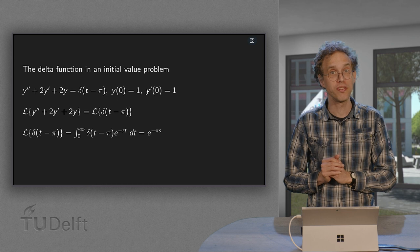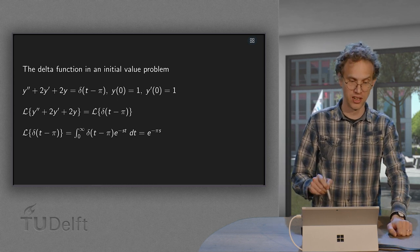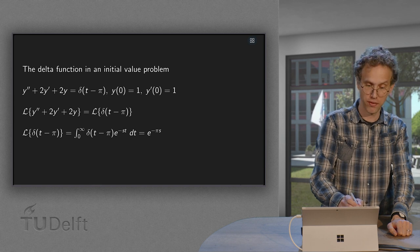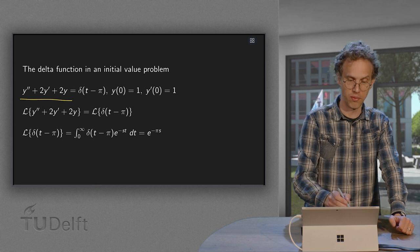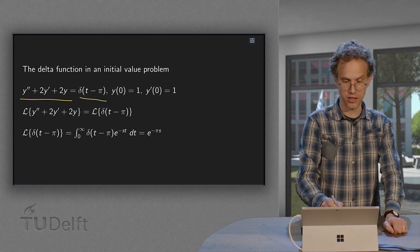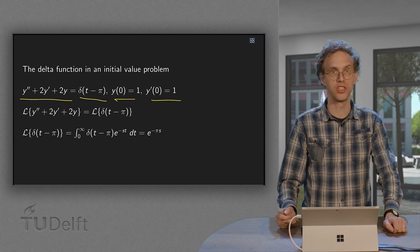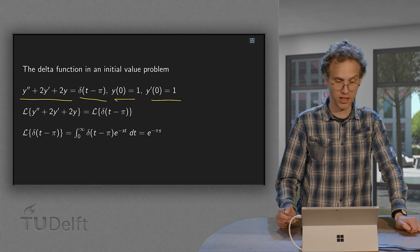Now, let us solve the initial value problem and see whether your intuition is correct. Here we have our initial value problem: y double prime plus 2y prime plus 2y equals, now with a delta peak administered at t equals pi and some initial conditions. Starting at 1 with unit starting velocity. So how do we solve that?